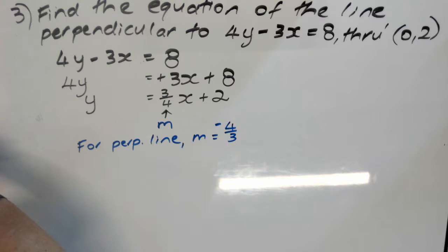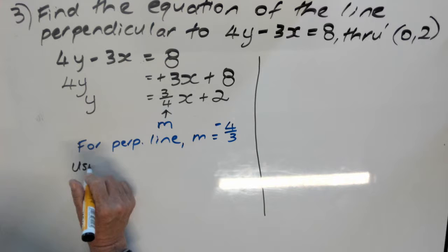So now we know the gradient of our perpendicular line. What we need to do next is we need to find its whole equation. So we're going to use the point we're given, 0, 2.